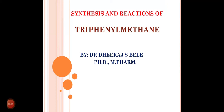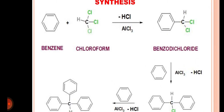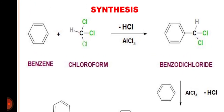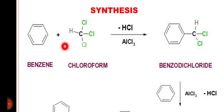Today's topic is the synthesis and reactions of triphenylmethane. The synthesis starts with benzene, which reacts with chloroform (CHCl3) in the presence of aluminium chloride, which acts as a Lewis acid.